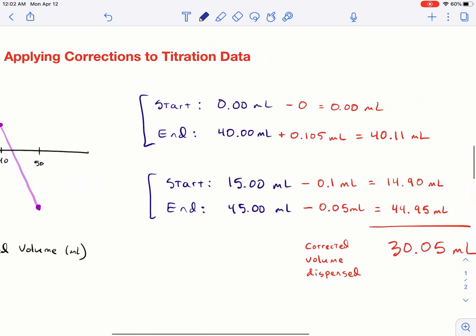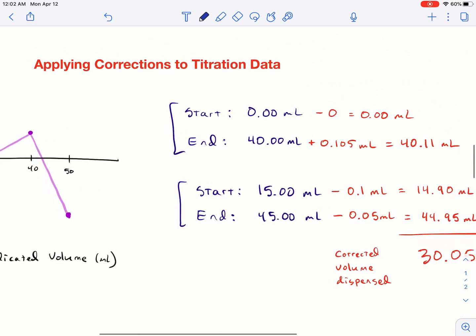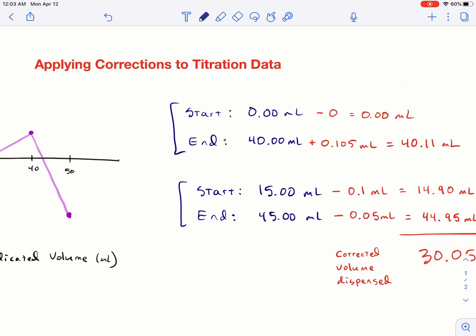How do we apply these corrections to titration data? So I have two scenarios here, one and two. So let's say the first scenario, say you started right at zero and you ended at 40. This one's pretty straightforward.